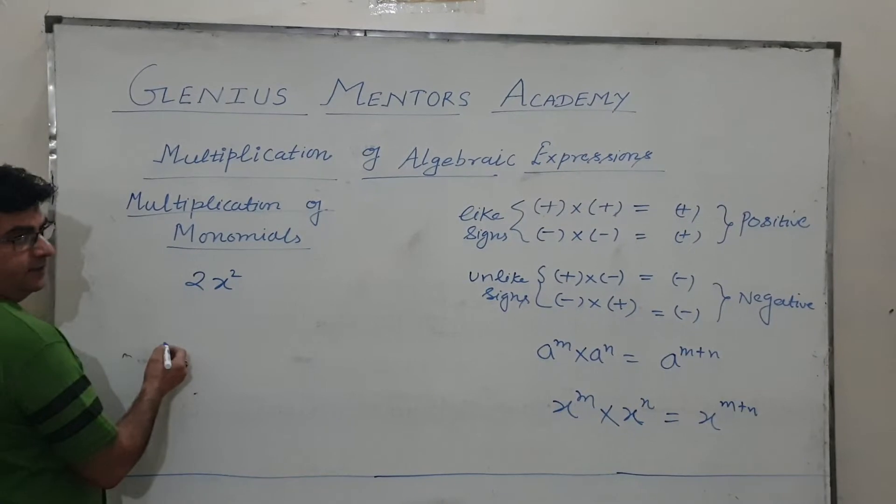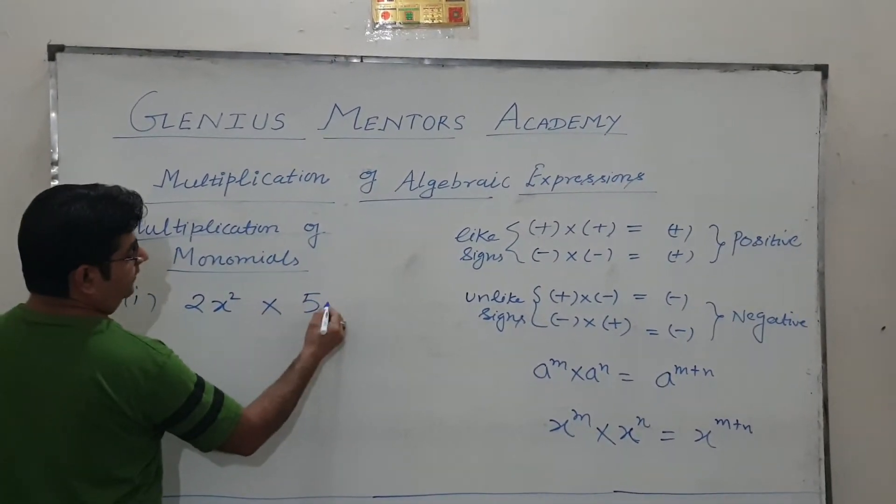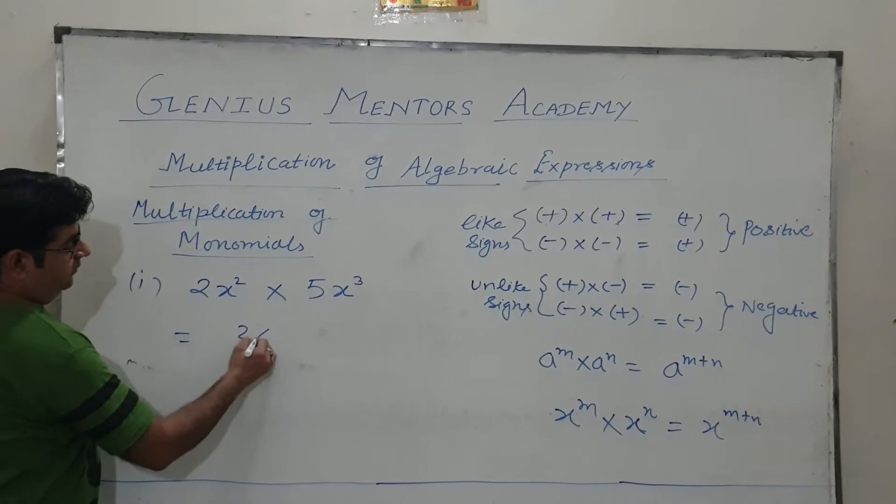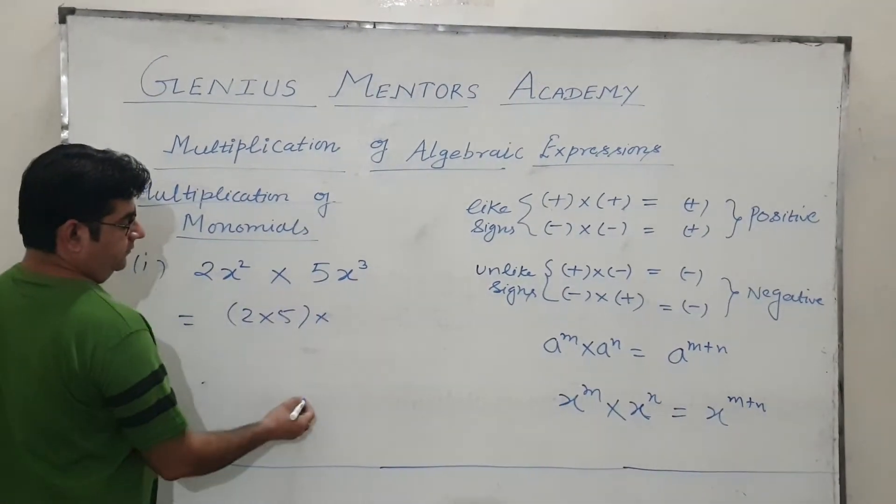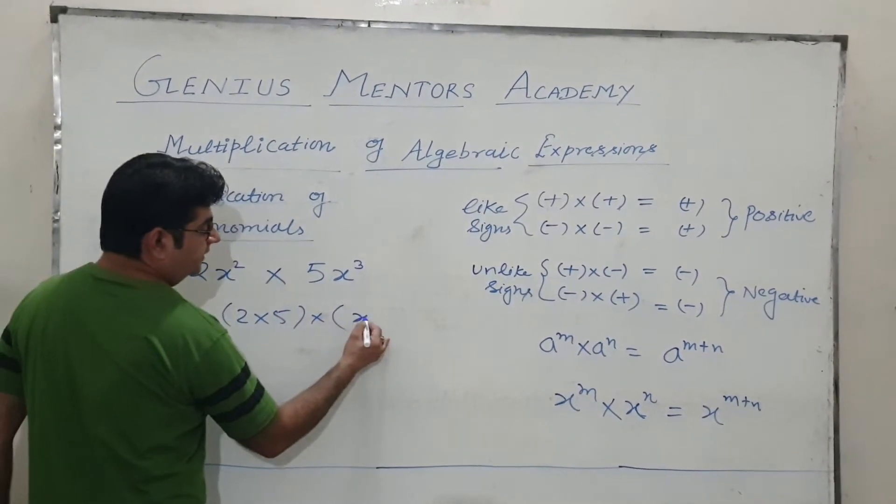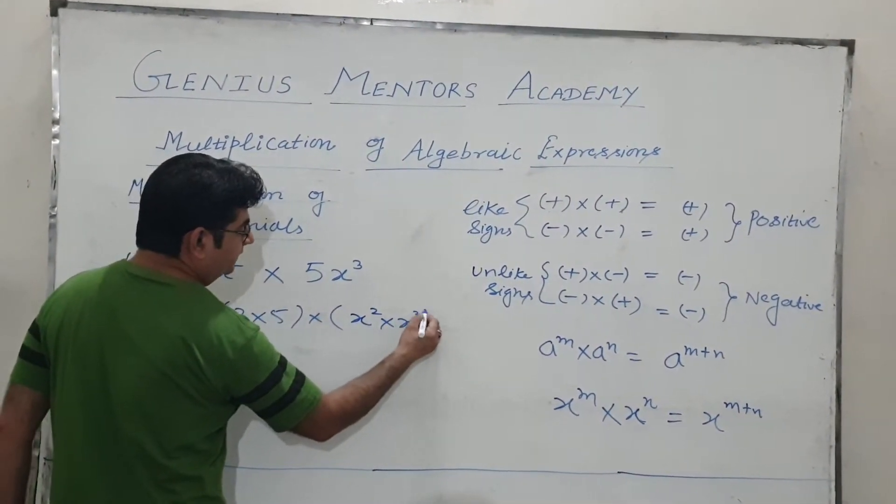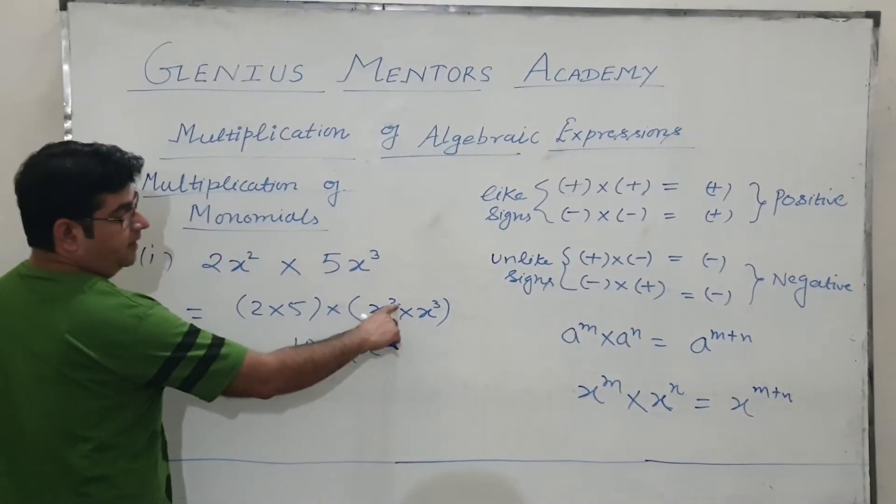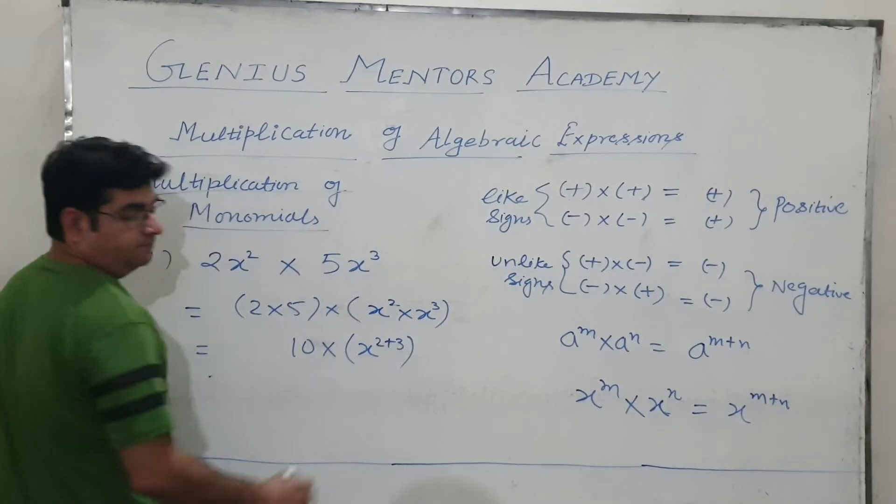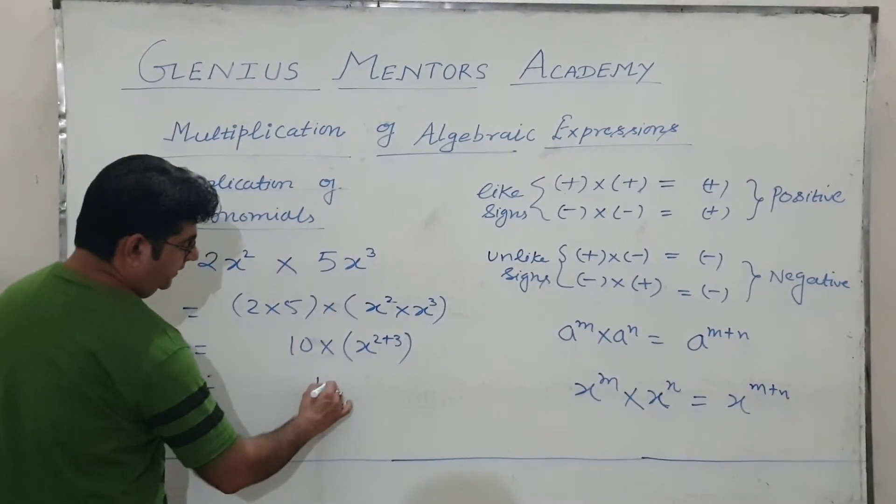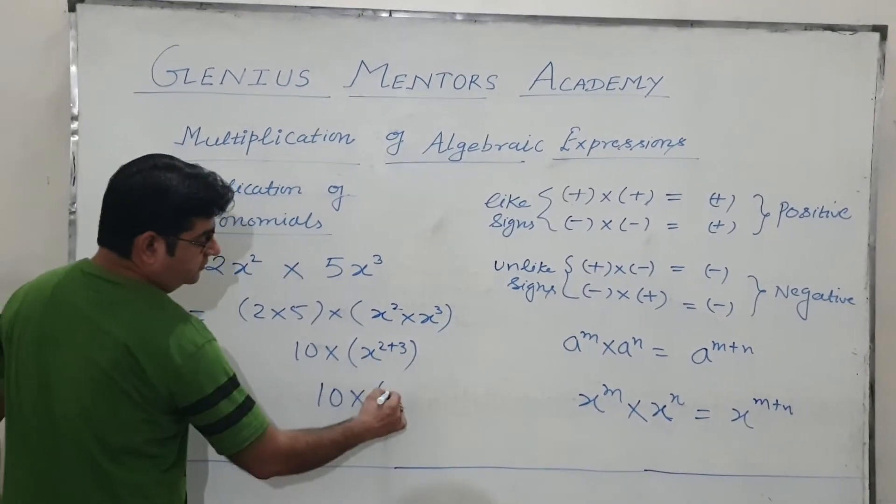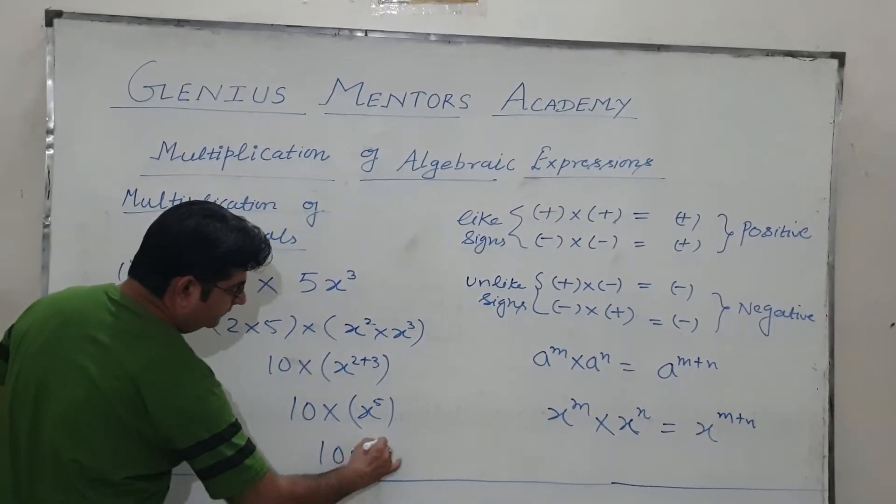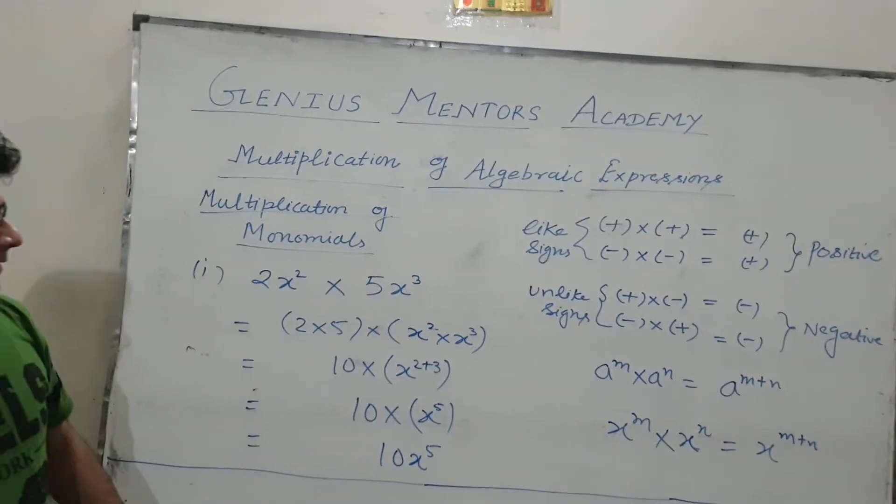Suppose 2x square multiplied by 5x cube. First, multiply the coefficients: 2 into 5. And second, take variable separately: x to the power square multiplied by x to the power 3. 2 into 5 is 10. Here, the variables are same, the powers will be added: 2 plus 3. So 10x to the power 2 plus 3, 5. Answer will be 10x to the power 5.